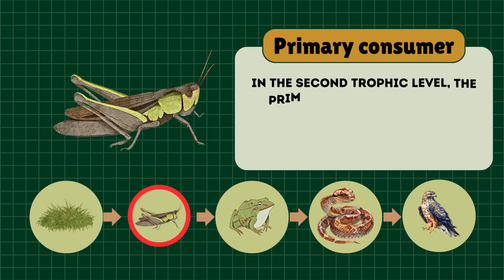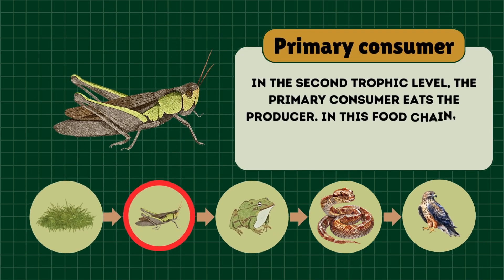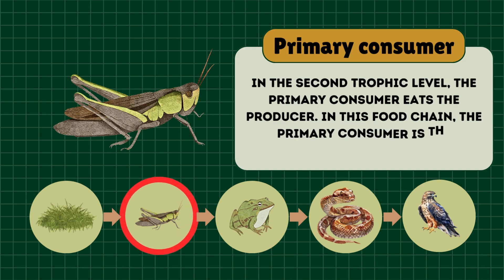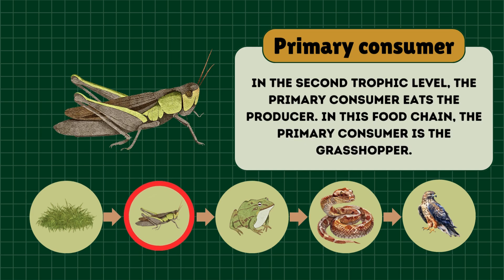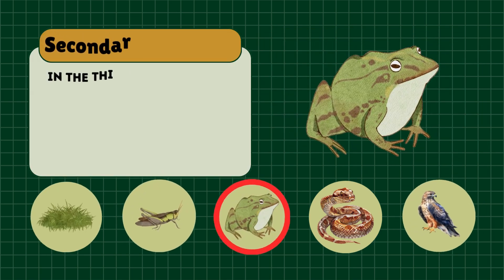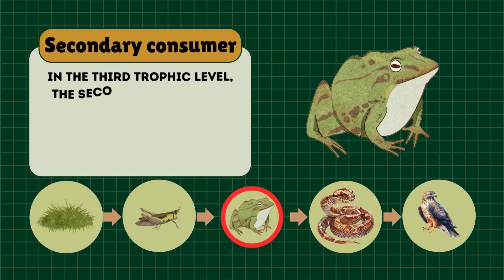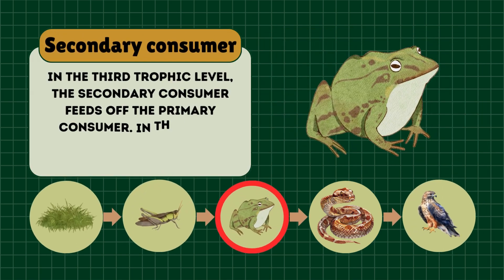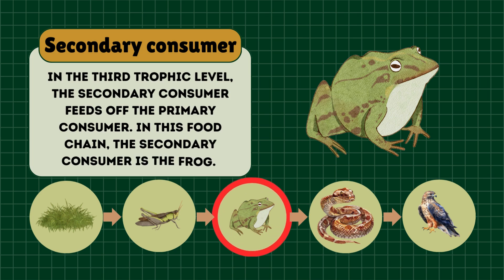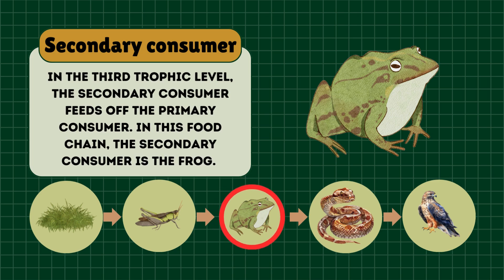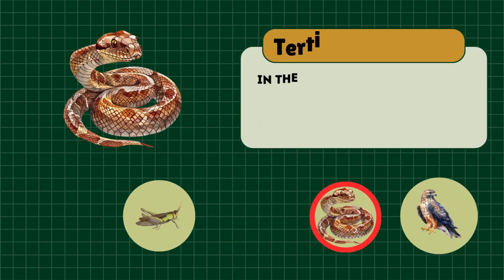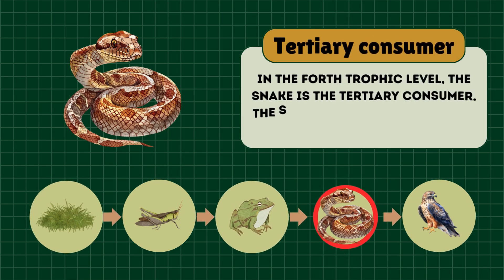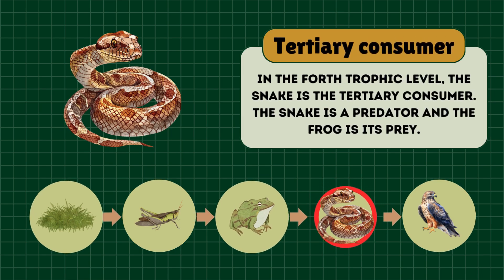In the second trophic level, the primary consumer eats the producer. In this food chain, the primary consumer is the grasshopper. In the third trophic level, the secondary consumer feeds off the primary consumer. In this food chain, the secondary consumer is the frog.